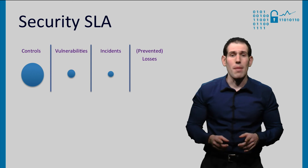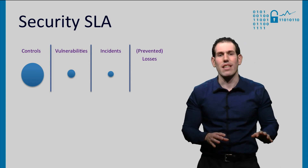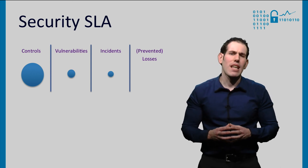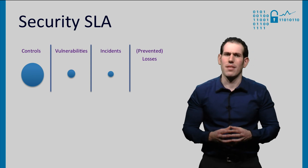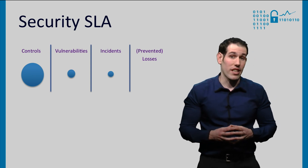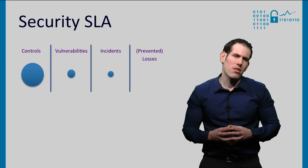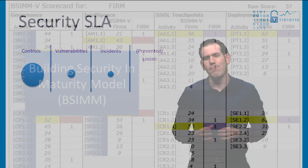If we map this particular SLA to our framework, we realize that the majority of the metrics are on the left-hand side. To a much lesser extent, it includes metrics on vulnerabilities and incidents.